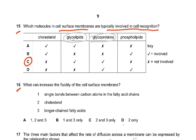Question 16: What can increase the fluidity of the cell surface membrane? The answer is 2 only — cholesterol. Single bonds between carbon atoms means saturated fat, which makes the membrane more solid, so that is wrong. Longer chain fatty acids also do not increase fluidity. Only cholesterol increases the fluidity of the cell surface membrane.